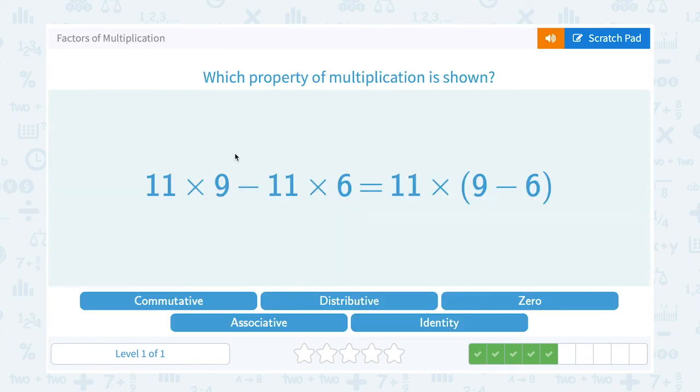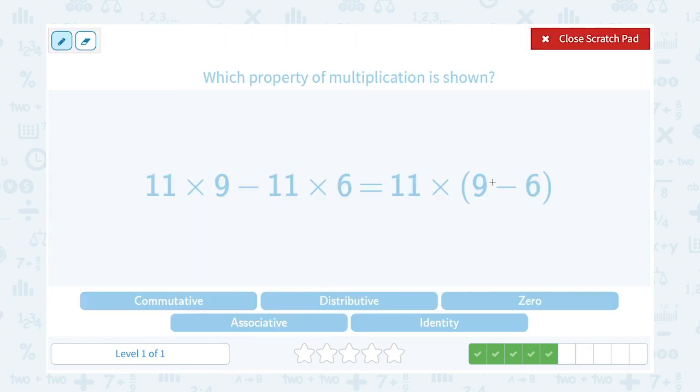11 times 9 minus 11 times 6 is equal to 11 times the quantity 9 minus 6. This is very similar to the last problem we saw, except there's a minus sign inside our parenthesis instead of a plus. But we would still distribute the 11 to that set of parenthesis. And when I say distribute, that means we're going to multiply it to both terms inside.